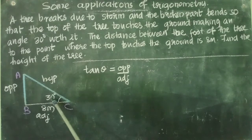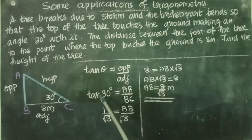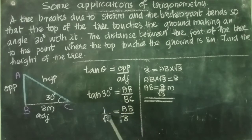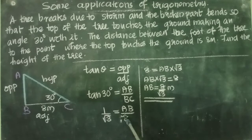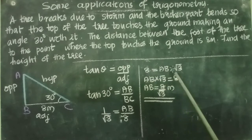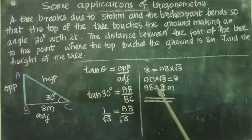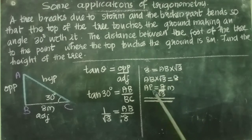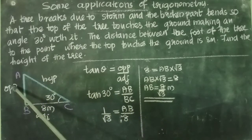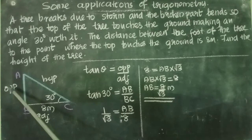Here θ is 30 degrees. The opposite side we need to find; the adjacent side is 8 meters. Tan 30° = AB / BC. We know tan 30° = 1/√3. So 1/√3 = AB/8. Cross multiplying, we get AB × √3 = 8, therefore AB = 8/√3 meters. So the opposite side AB is 8/√3 meters.